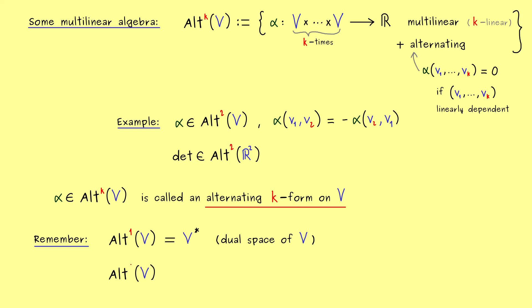We can also define zero-forms. This is just a useful convention to make some formulas nicer later. We define it as the real number line, so it's a set of scalars from the vector space V.